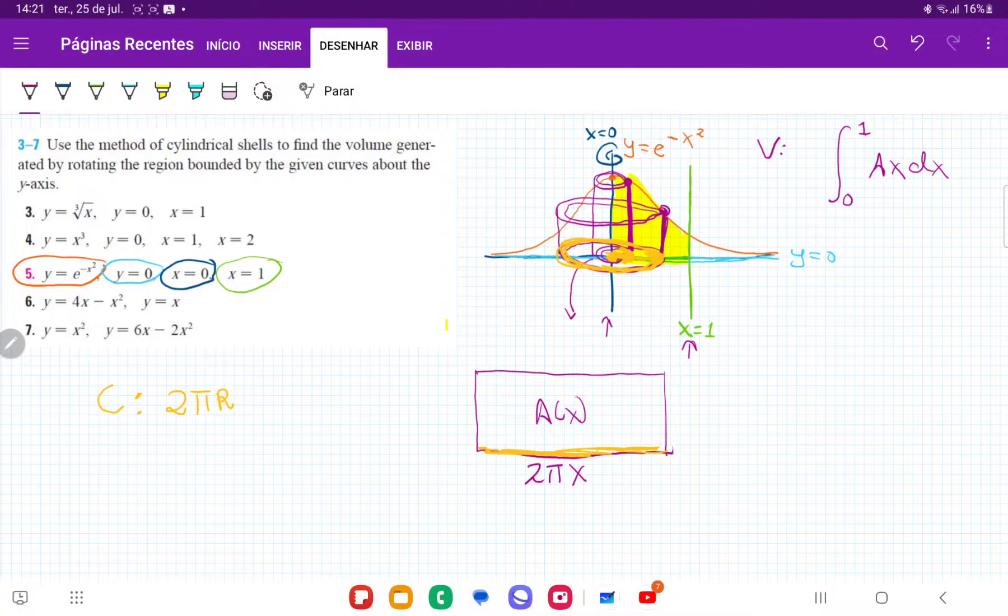And my height, well, my height is just wherever it touches this orange function. So, for example, if I go further and further, it would just touch this orange function, this e to the negative x squared, like so. So my height is just the value of the function wherever I'm at on my x-axis. So it's basically just e to the minus x squared.